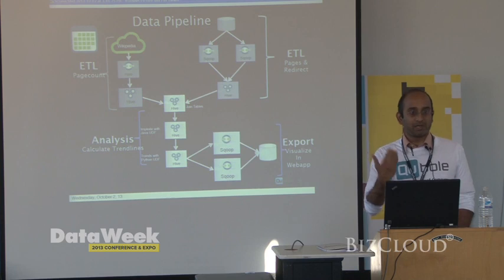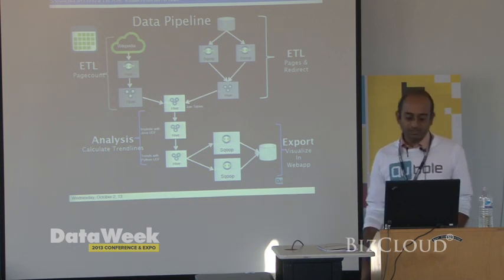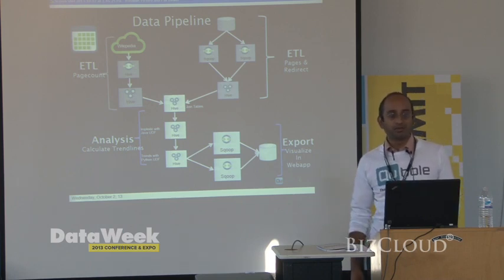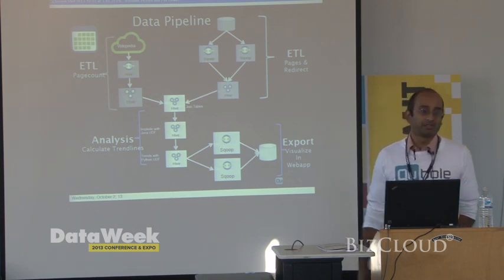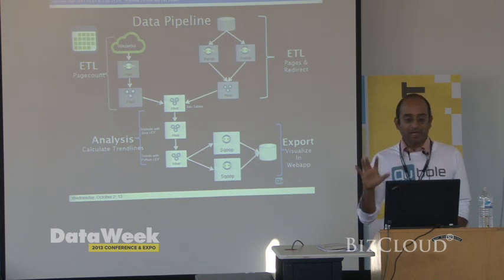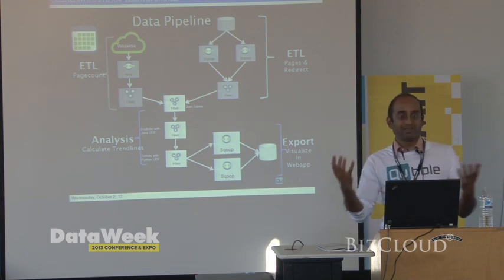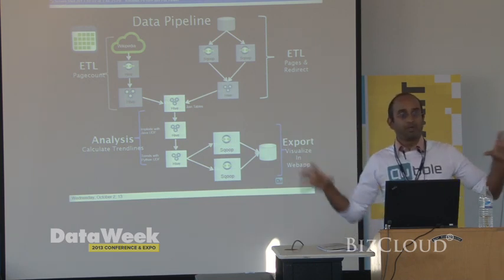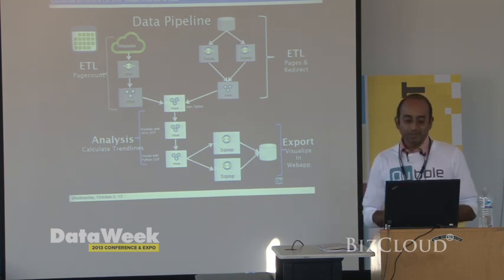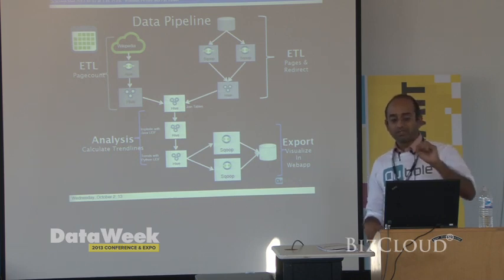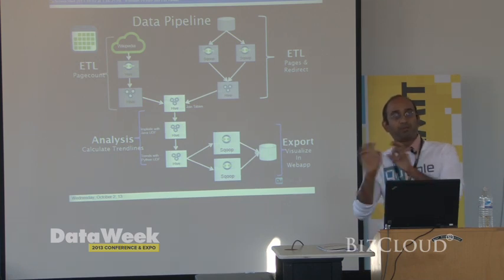You can divide this into two pieces: import and export — how do you get data from multiple different sources into a single system to process in one place. That's the ETL to get the page count, the ETL to get pages and redirects. And finally, when you've done all this work, you want to push the result. The app I showed you is a simple Ruby on Rails app that fetches data from a MySQL table storing, for each topic on each day, what the trend score is.